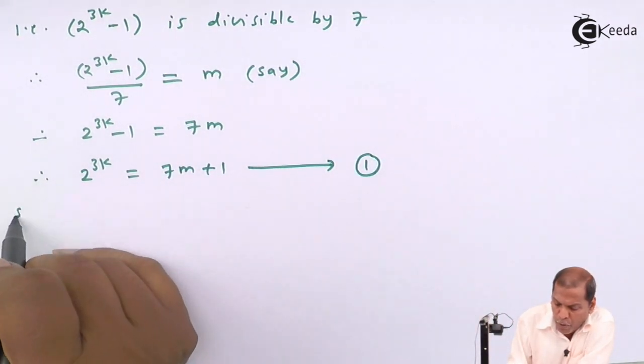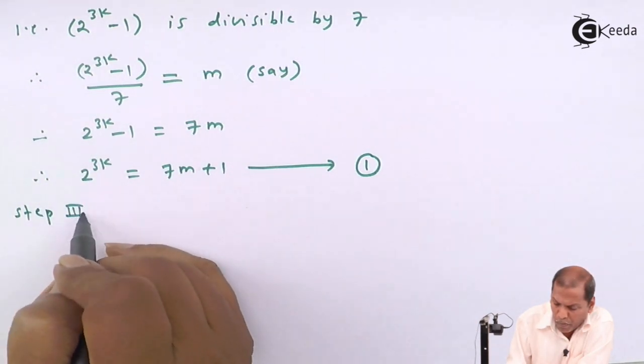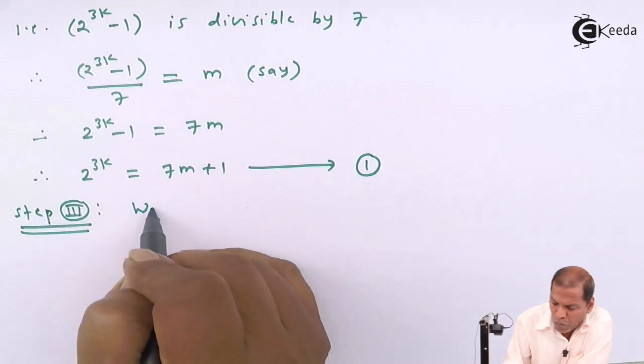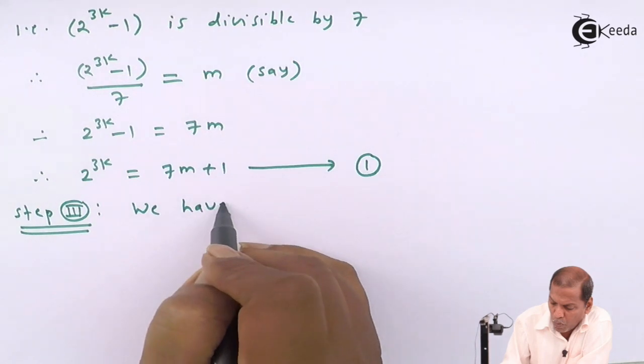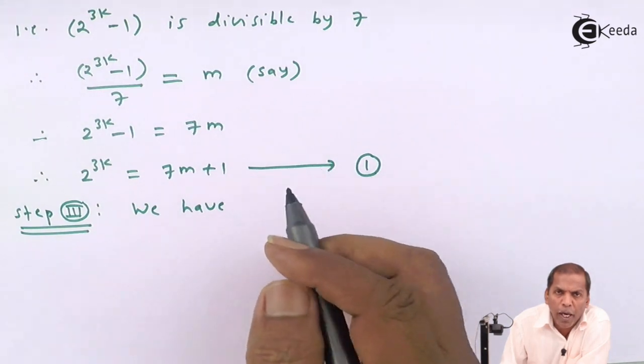Now we consider step number 3. We have to prove that P(n) is true for n equal to k plus 1.